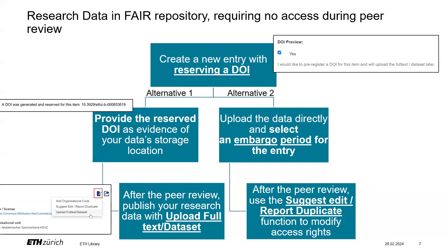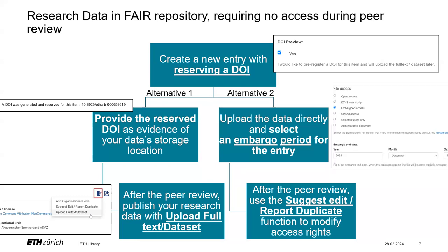You can then upload the data after the peer review by using the upload full text data function. Alternatively, you can upload the research data when creating the entry and impose an embargo so that the data is not yet publicly accessible. You decide the length of the embargo and can adjust it as needed. Once the associated publication is published, you can adjust the access rights by modifying the corresponding metadata field with the SuggestEdit function.